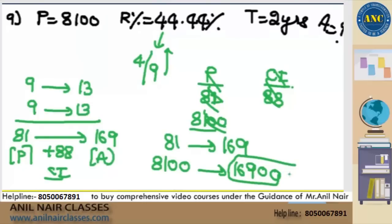Now you might ask me a doubt: Anil sir, here 8100 is a multiple of the denominator 4 by 9. What if it is not a multiple? Write down the 10th question.